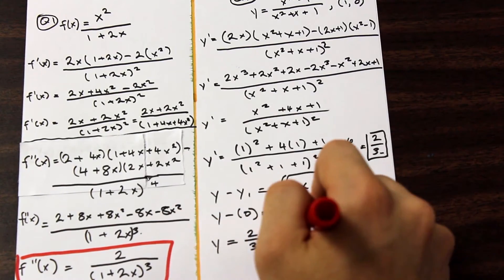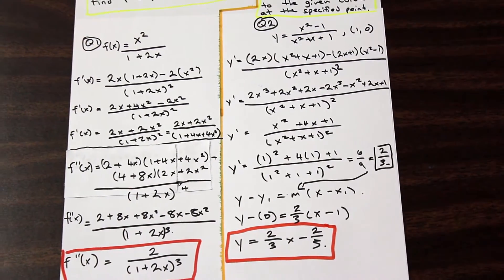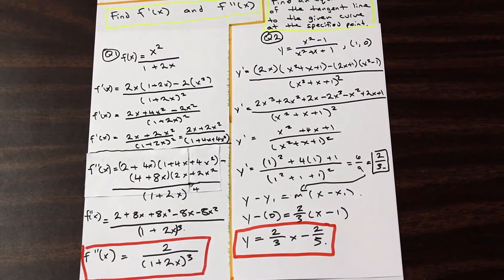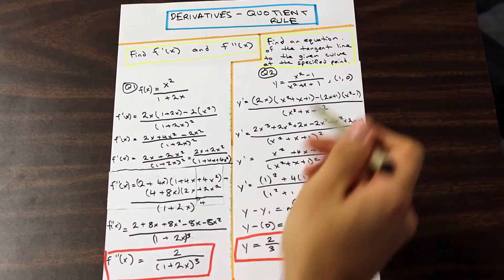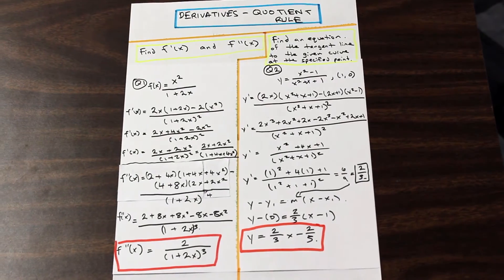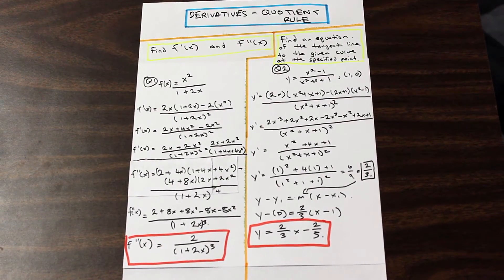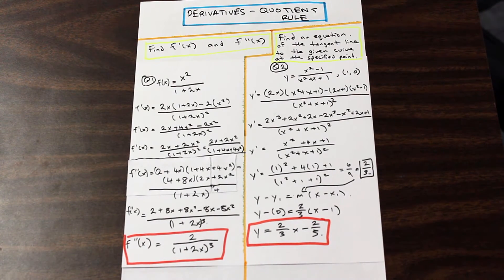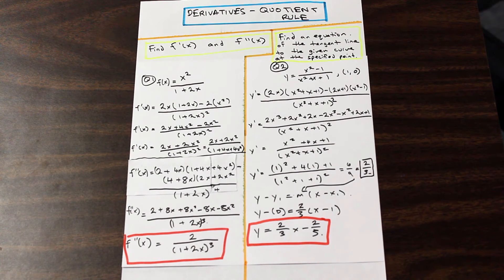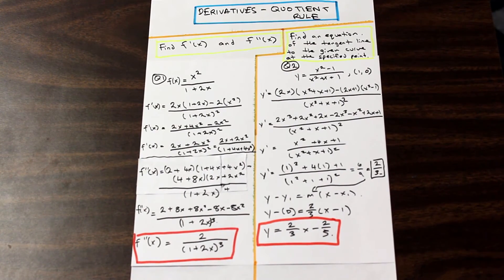Remember what we're always solving for — go back and read the question. This is the equation of the tangent line, not the derivative. That is it for this section on quotient rule. Hopefully that helped you get a feel for some trickier questions and cement your knowledge. Stay tuned — next up is chain rule. Thanks for watching.